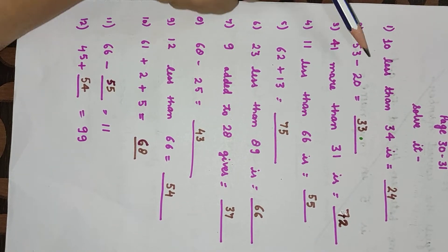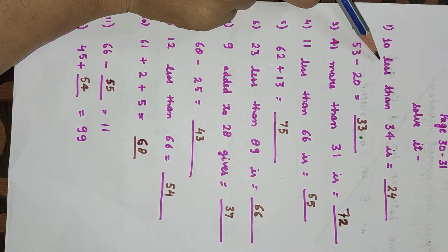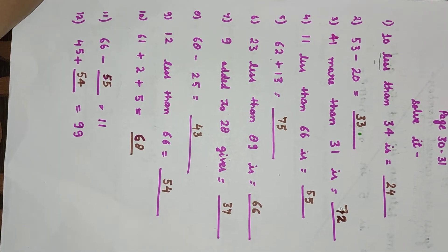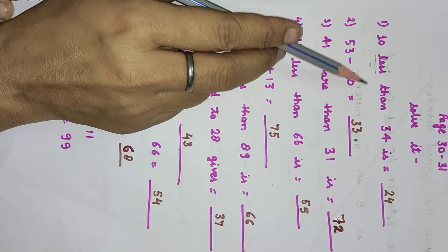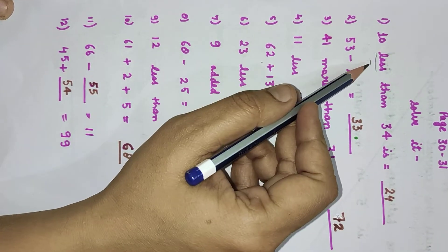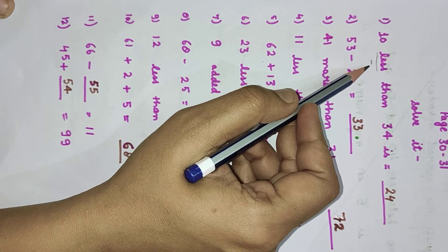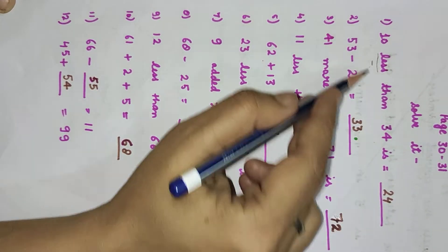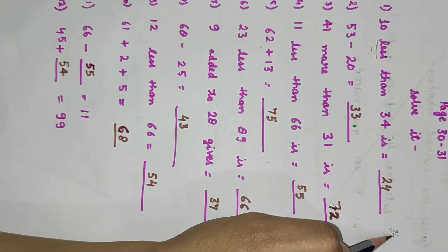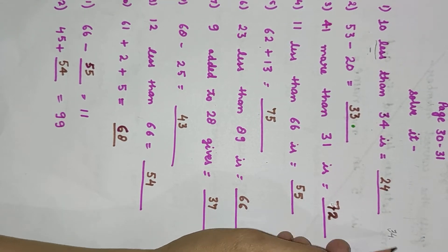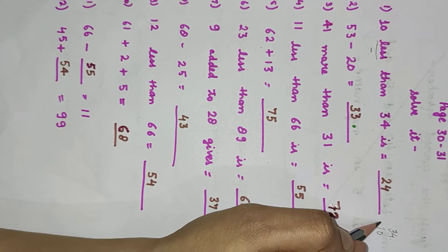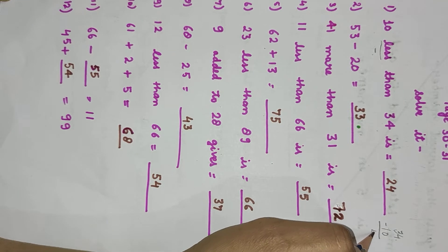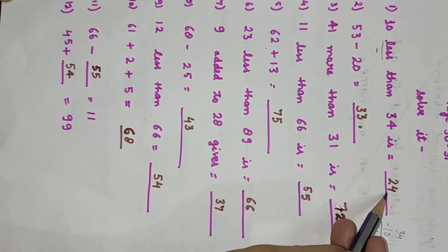Here is: 10 less than 34 is. Now, 'less' means what we have to do? We have to do minus. 10 less than 34 is 24. We will minus both the digits. Suppose here is 34 and here is 10. The greater digit will be on top. 4 minus 0 will be 4, and 3 minus 1 will be 2. The answer will be 24.